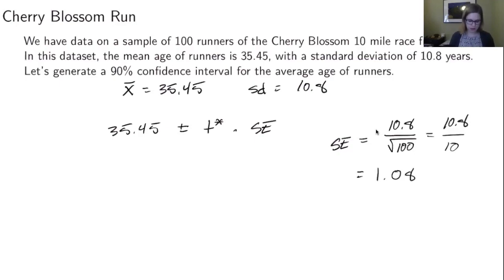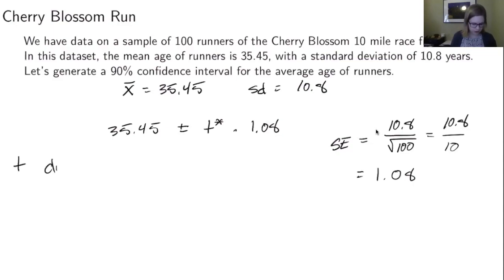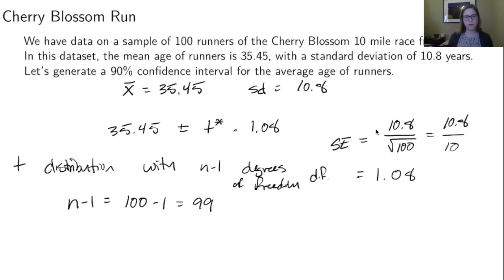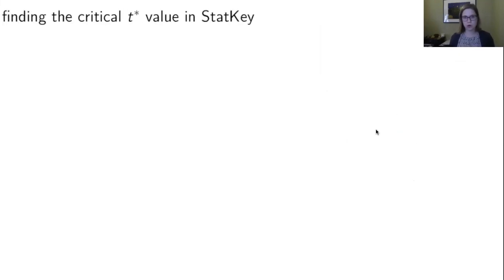So our standard error is 1.08. Then the tricky thing is the t* value. We're going to look at a t distribution with n minus 1 degrees of freedom — sometimes abbreviated df. In this case, n minus 1 is 100 minus 1, which is 99. We're going to find the critical t value using StatKey, so I'm going to go over to StatKey.